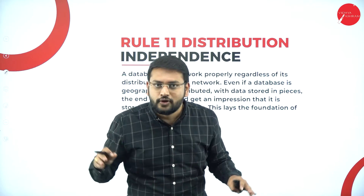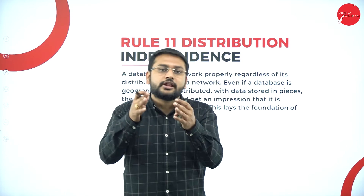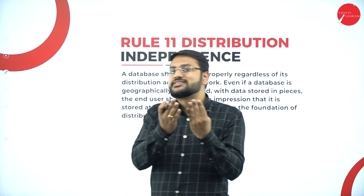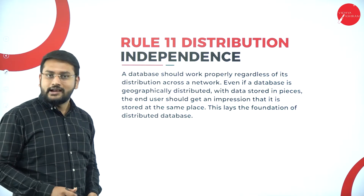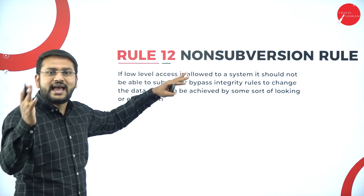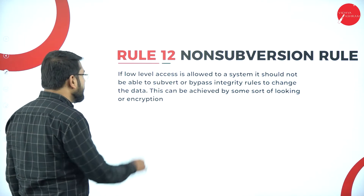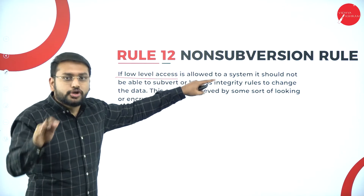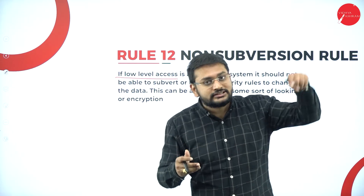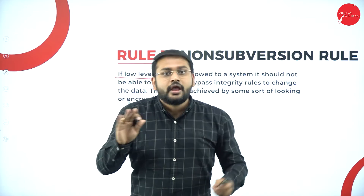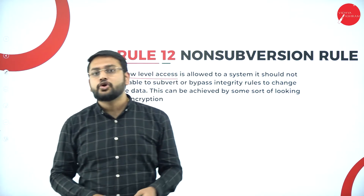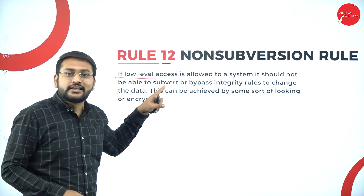Rule Number Eleven is Distribution Independence: even though data is distributed across a network from multiple sources, the experience for the user should feel like it's coming from a single source. Rule Number Twelve is the Non-Subversion Rule: if low-level access is allowed to the system, it should not cross the integrity constraints. Just because access is granted doesn't mean rules can be violated — strict rules must be maintained at all times.